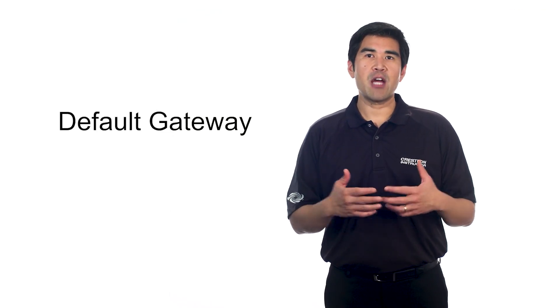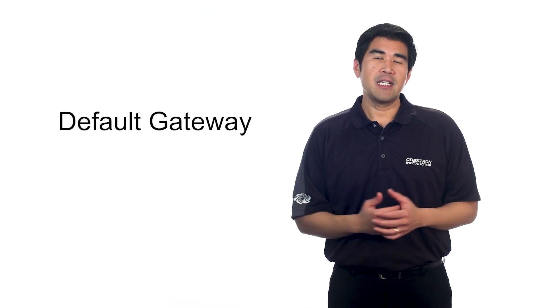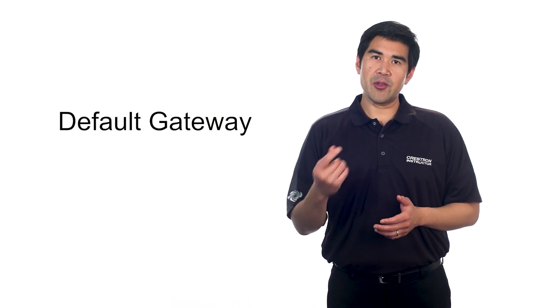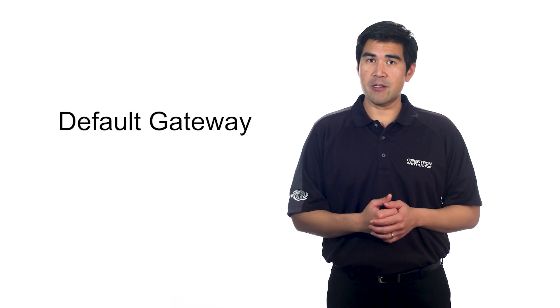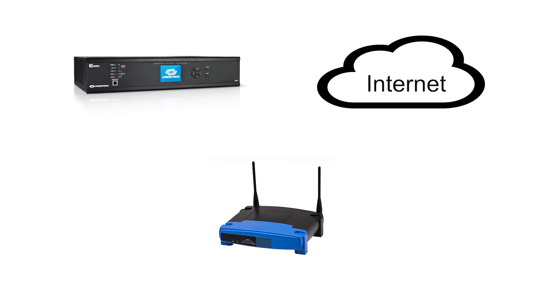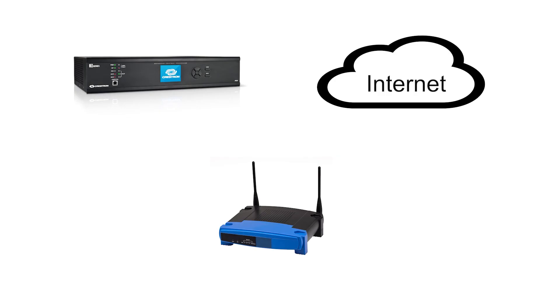With an IP address and a subnet mask, devices on a network can now communicate with each other. If devices on that network need to communicate with another device on a different network, it needs to be sent via a device that knows how to communicate with other networks. This device is specified as the default gateway. The default gateway routes Ethernet traffic across different networks — it's referred to as a router.